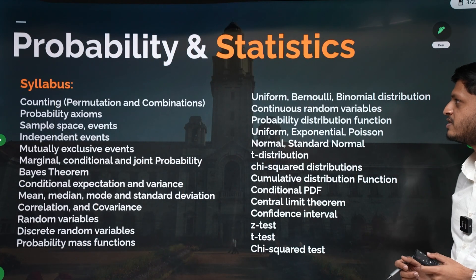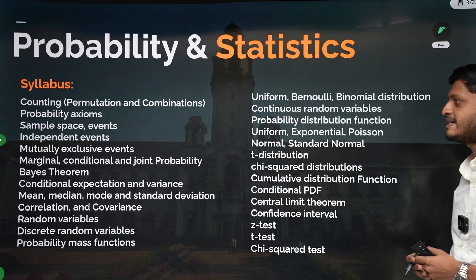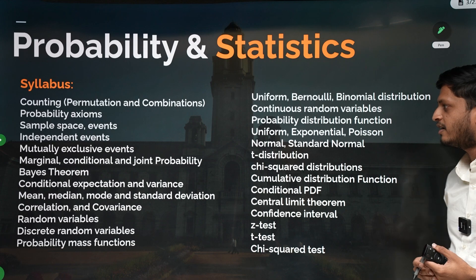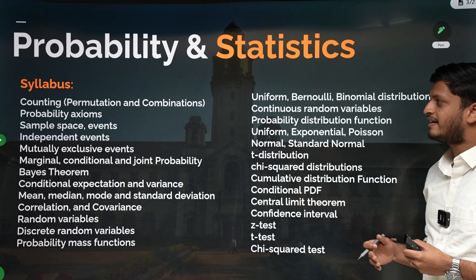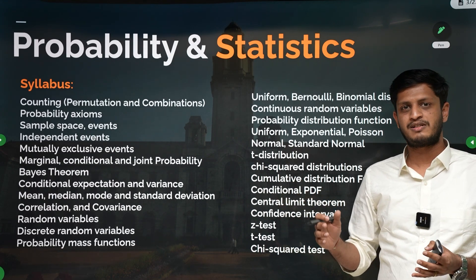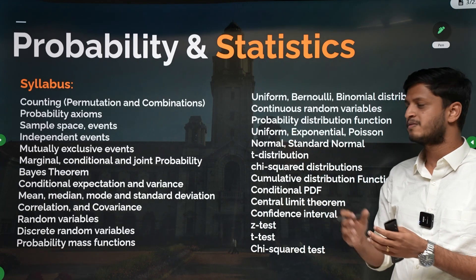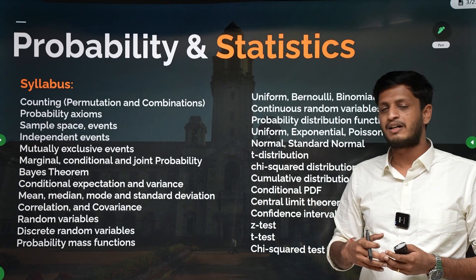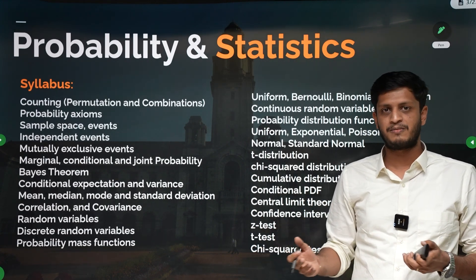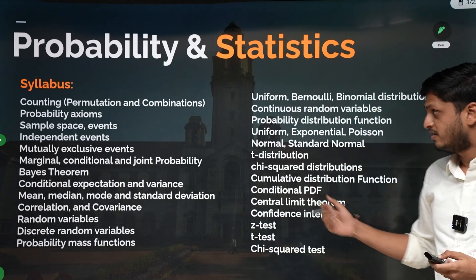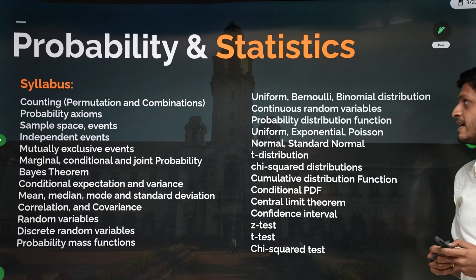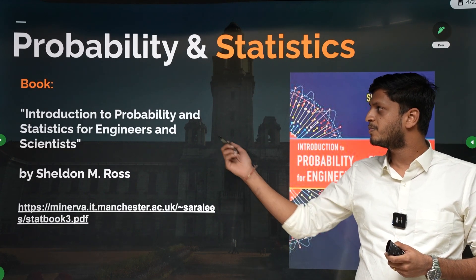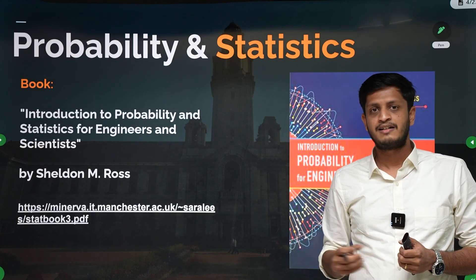Coming to textbooks and the syllabus — this is the syllabus for probability and statistics as given by the IIT authorities. In our course, we have divided them into six modules for probability and statistics, and all these concepts will be covered. We also tend to cover additional concepts which might appear in the GATE exam.